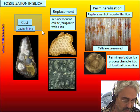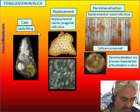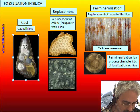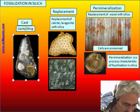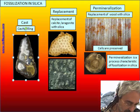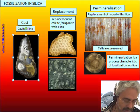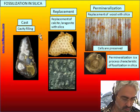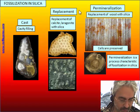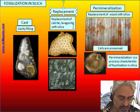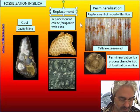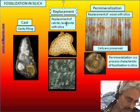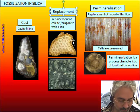The simpler type is the cast — the filling of a cavity — like in this gastropod that is transformed into an agate. This is not so common. Replacement is a kind of fossilization by replacement of aragonite or calcite by silica.